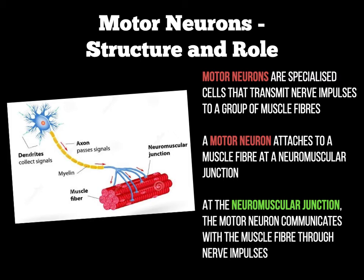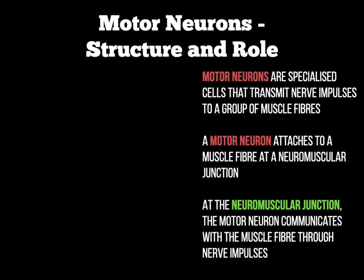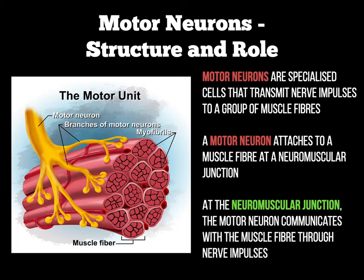As you can see, we've now got what we call a neuromuscular junction. To show you that in a bit closer — it's where the motor end plate, the end part of the motor neuron, is attaching to the muscle fibre. That whole section is called the neuromuscular junction.